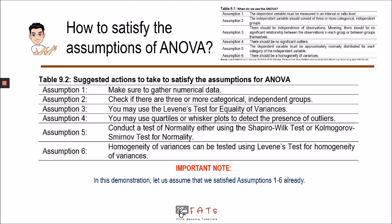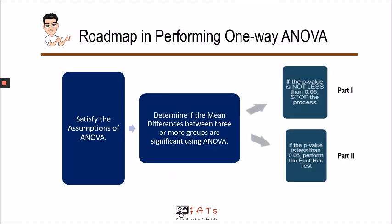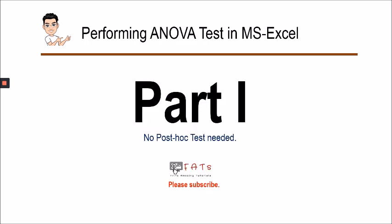When performing Analysis of Variance, remember this roadmap. After satisfying the assumptions, we proceed to the ANOVA test. Upon performing the test, two situations may occur: if the p-value is not less than 0.05, we stop and make a conclusion. However, if the p-value is less than 0.05, a post hoc test will be performed — we will elaborate on that in our next video.